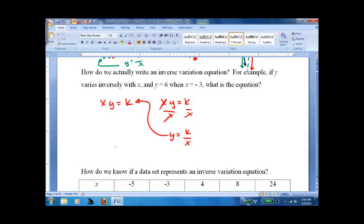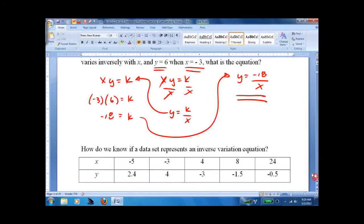So what's the equation if y equals 6 when x equals negative 3? Simple. Negative 3 times 6 equals k. k equals negative 18. Y equals negative 18 over x. It's that easy. Just remember this part here. It'll save you a lot of time and effort.